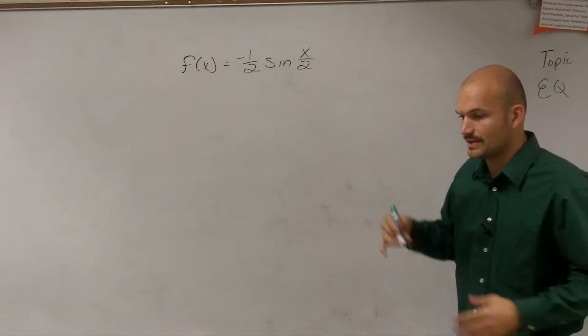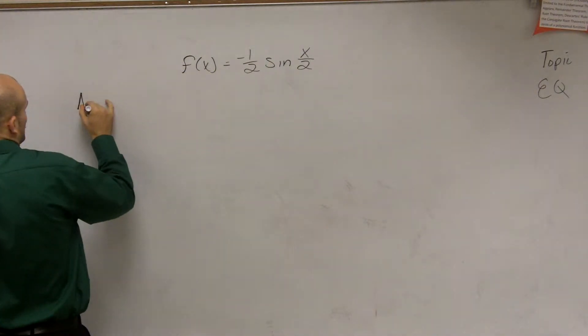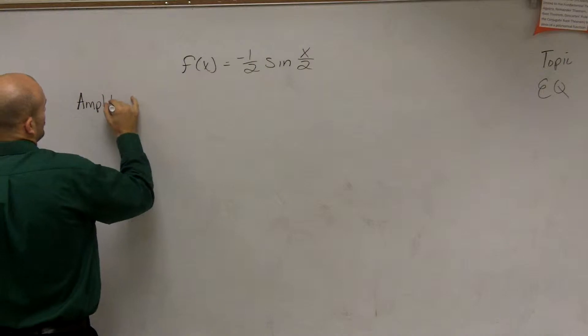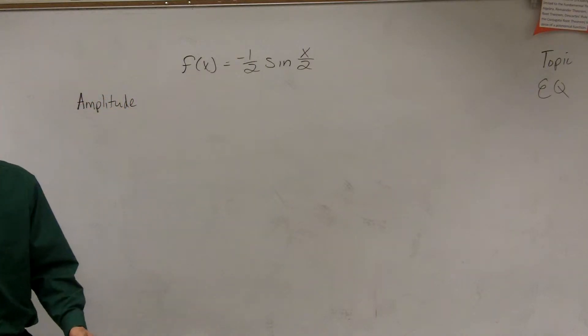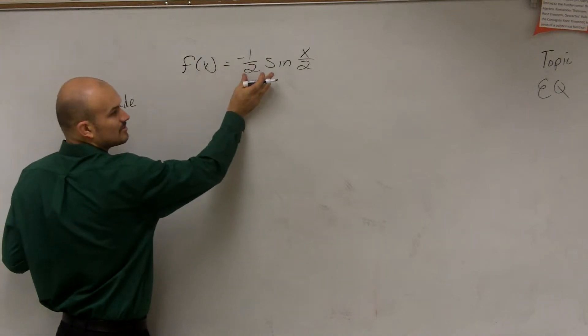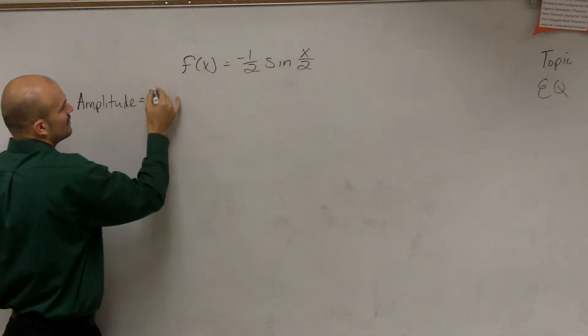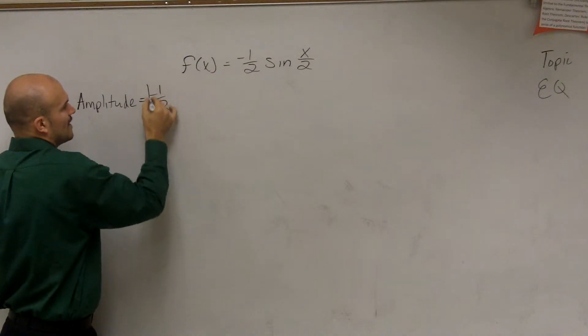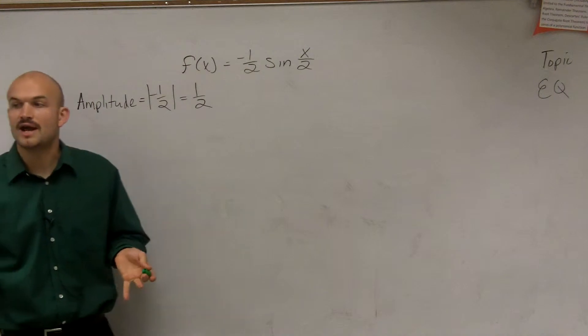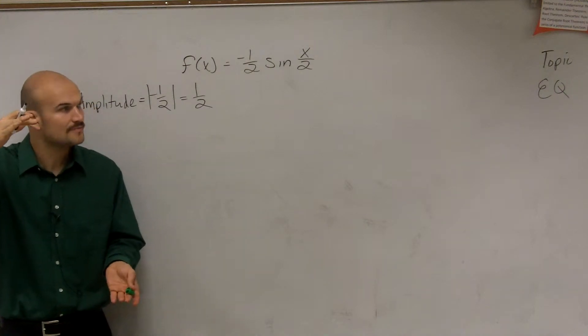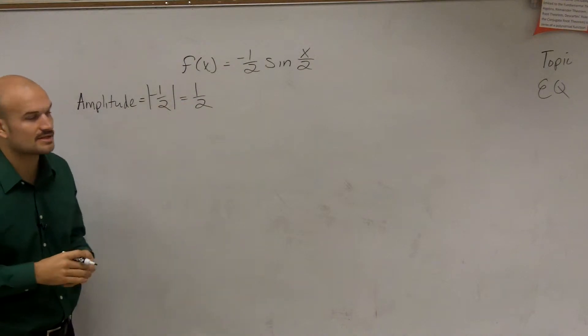So we have the problem. The main important thing is there's a couple important points that we want to figure out. The first one is going to be amplitude. Remember, amplitude was the absolute value of your a. Well, a is going to be in front of your function that's multiplying by, so therefore I'm going to have negative 1/2 absolute value, which is equal to 1/2. Now remember, amplitude is your half distance from your max to your min, so that distance, the half distance, is going to be 1/2.